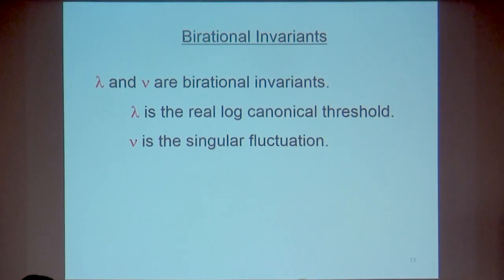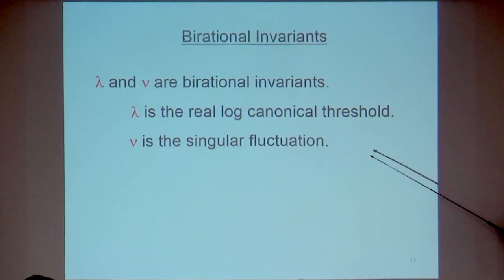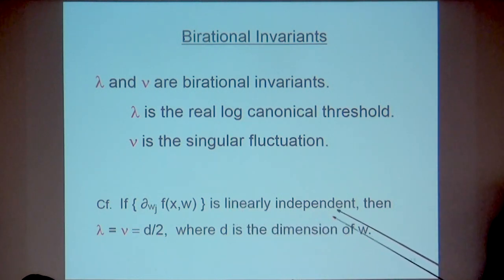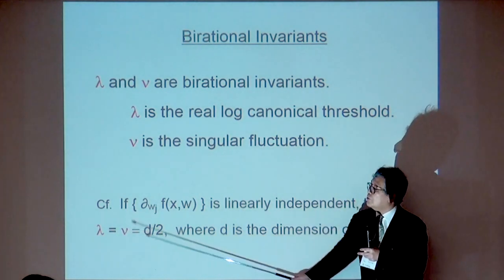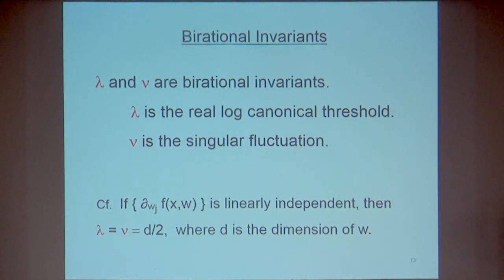Lambda and nu are birational invariants. Lambda is the real log canonical threshold — a very famous birational invariant in high-dimensional algebraic geometry. For concrete learning machines, the concrete values of lambda have been derived in many papers. Nu is the singular fluctuation, a new birational invariant found in machine learning. If the derivative of F is linearly independent, then lambda equals nu equals d/2, where d is the dimension of the parameter space. But in general, lambda and nu differ from d/2.